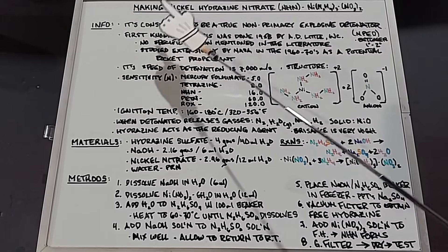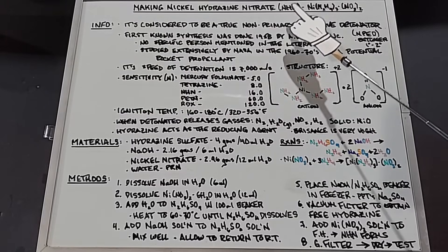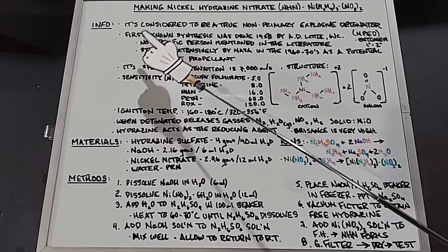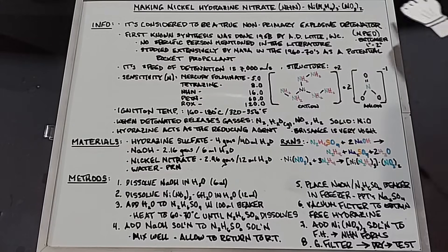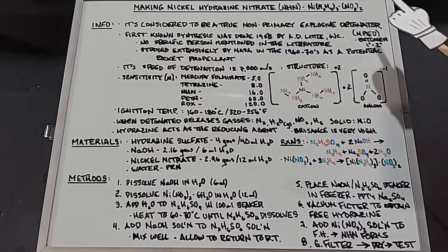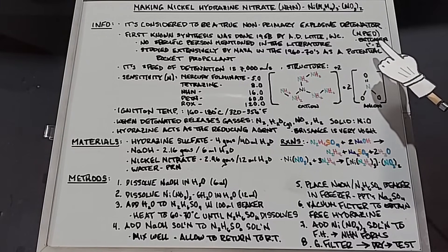This video is about making nickel hydrazine nitrate, better known as NHN. Some info: NHN is considered to be a true non-primary explosive detonator, known as an NPD, and it really does fall between a primary and a secondary explosive.